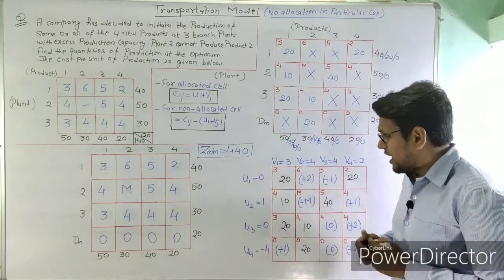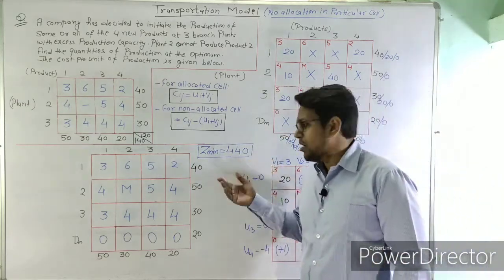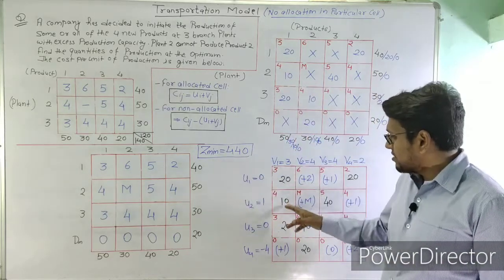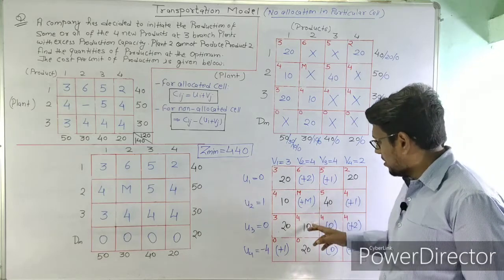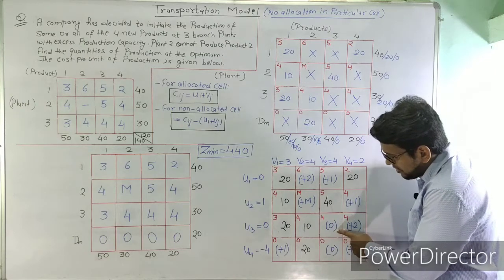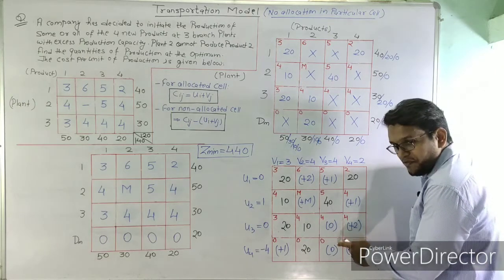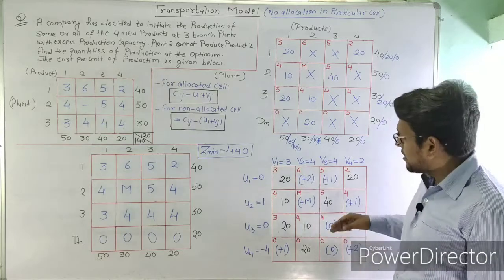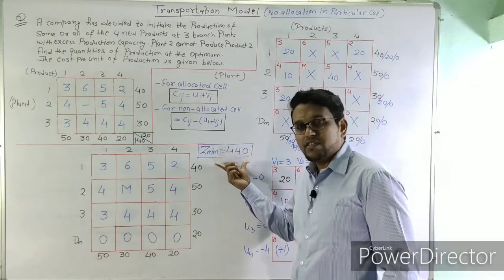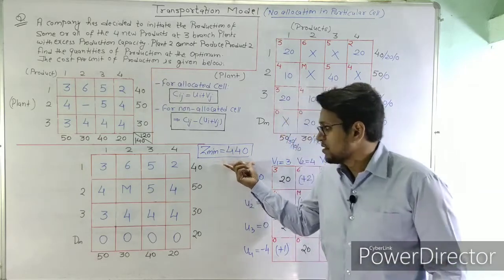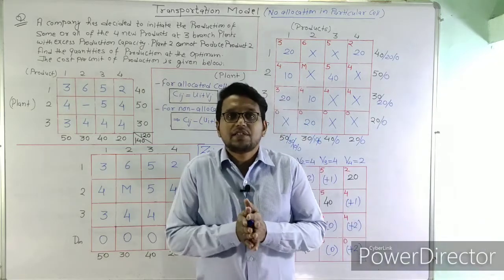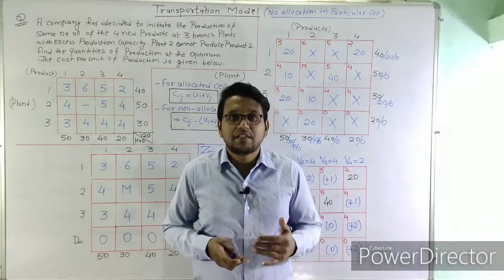The minimum production cost Z_min is calculated from the allocations: 20×3 + 10×4 + 20×2 + 10×5 + 20×3 + 40×4 + 20×0 = 60 + 40 + 40 + 50 + 60 + 160 + 0 = 440. The cell with value 0 indicates an alternate optimal solution exists with the same cost. This is the optimal solution; thank you for watching, please share the lecture.